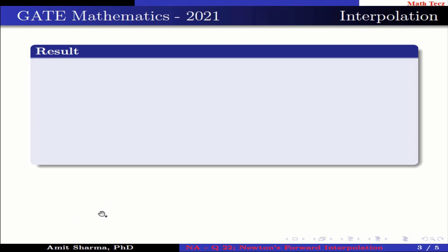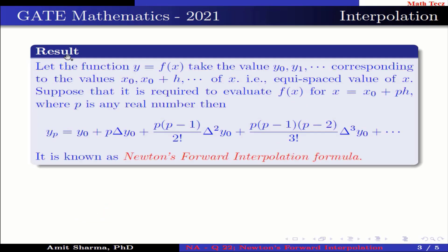The following result is very useful in order to solve the equation. Let the function y = f take values y₀, y₁, and so on corresponding to equispaced values x₀, x₀+h, and so on. If it is required to evaluate f(x) for x = x₀ + ph, where p is any real number, then: y(p) = y₀ + p·Δy₀ + p(p-1)/2! · Δ²y₀ + p(p-1)(p-2)/3! · Δ³y₀ + ... This is known as Newton's Forward Interpolation Formula.